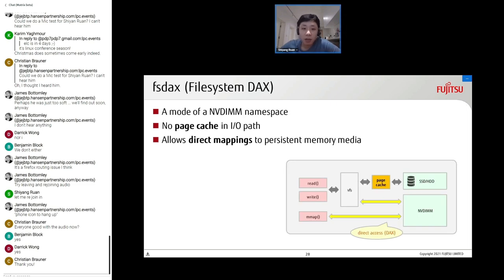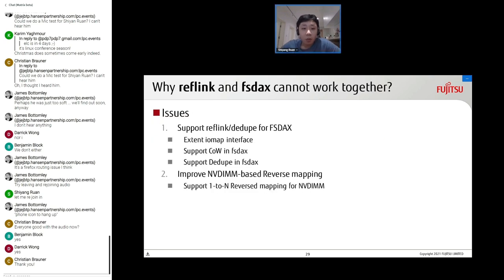What is FS DAX, also called file system DAX? It is the mode of an NVDIMM namespace where page cache is removed from the I/O path, allowing mmap to establish direct mappings to persistent memory media. We investigated why reflink and FS DAX cannot work together and found two main issues: we need to support copy-on-write and dedupe in FS DAX by extending the IOMAP interface, and we need to improve the current NVDIMM-based reverse mapping to support one-to-N mapping for NVDIMM.